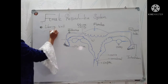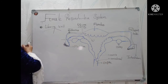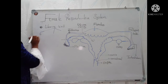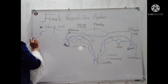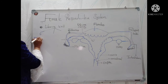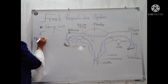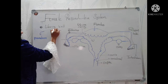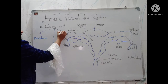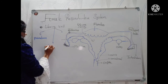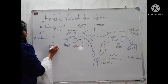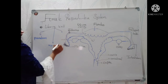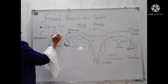The uterine wall also has three main parts, which are three layers: the outermost is the perimetrium, the middle part is called the myometrium, and the inner part is called the endometrium.